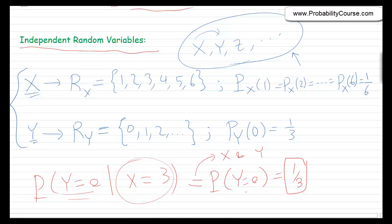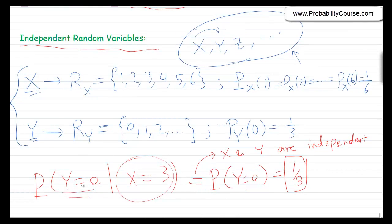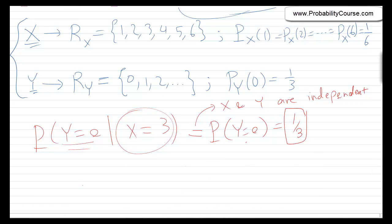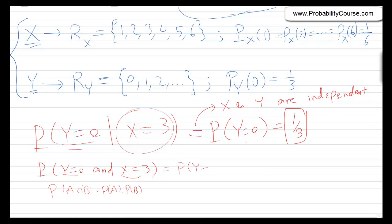Two random variables are independent if knowing the value of one gives no information about the other. If you ask for P(y=0 and x=3), since these are independent events, P(A and B) = P(A)·P(B). So P(y=0 and x=3) = P(y=0)·P(x=3) = (1/3)·(1/6) = 1/18.